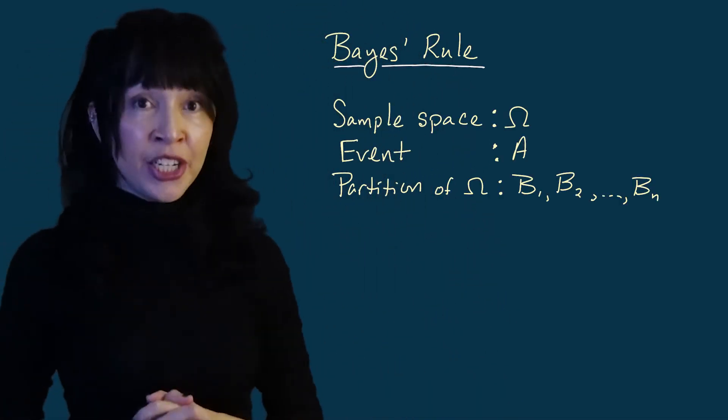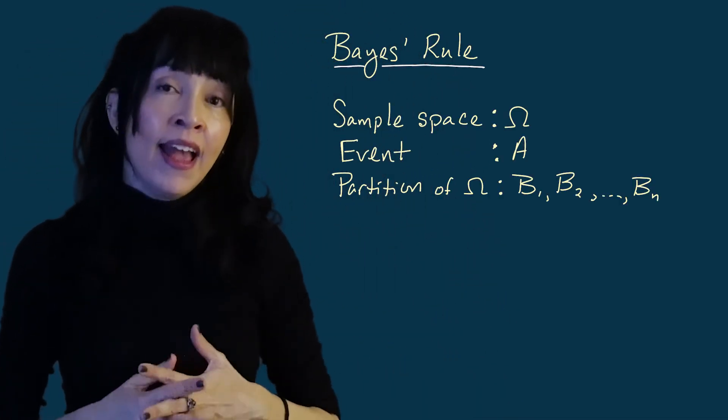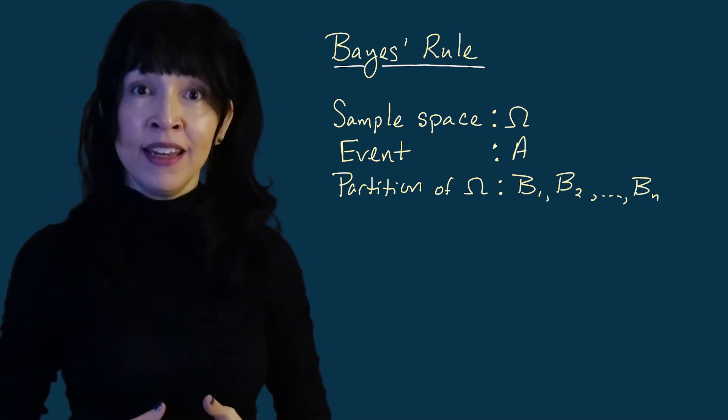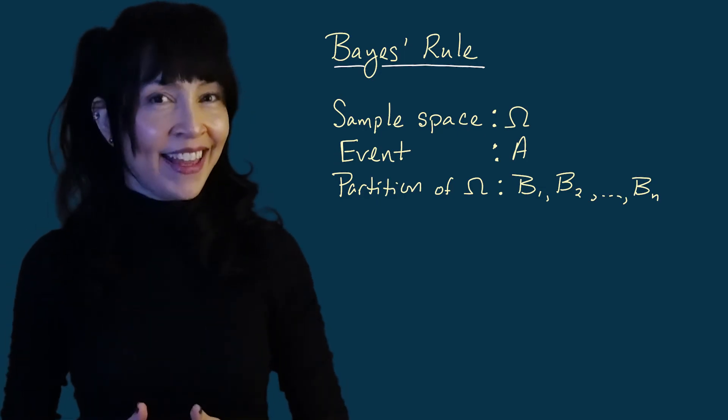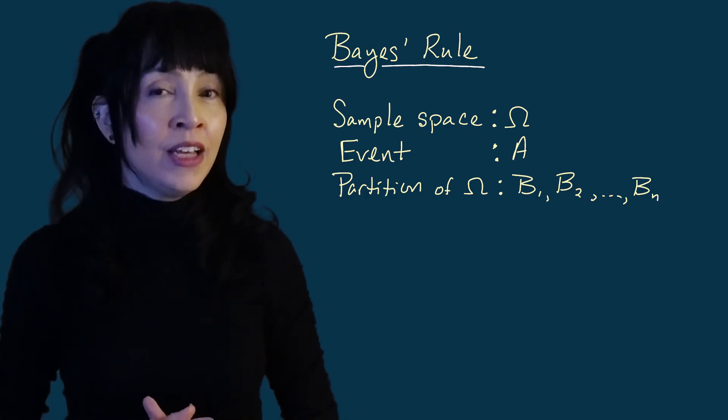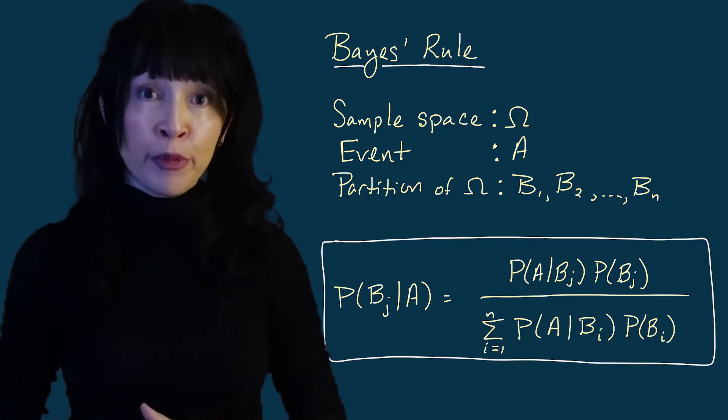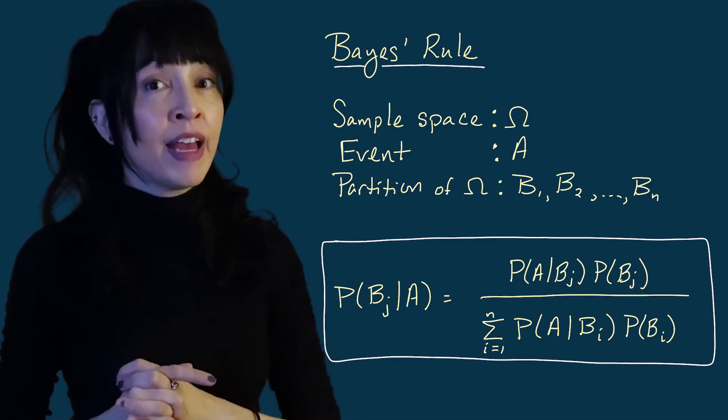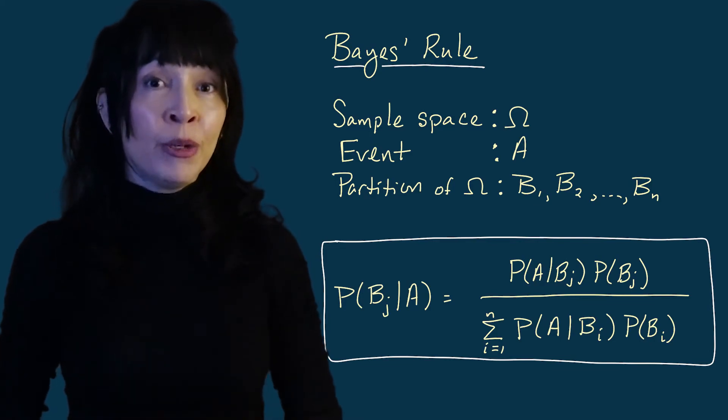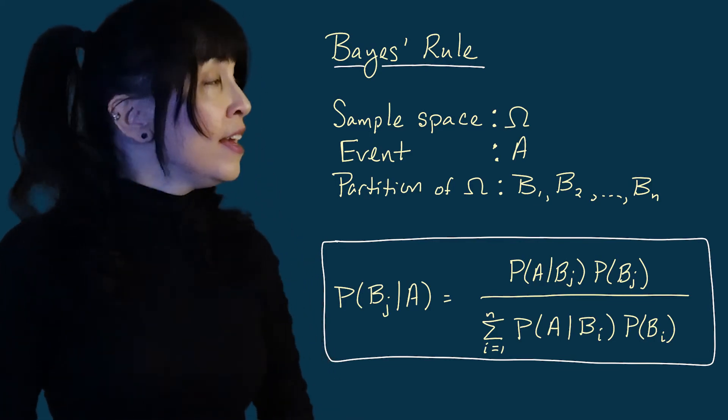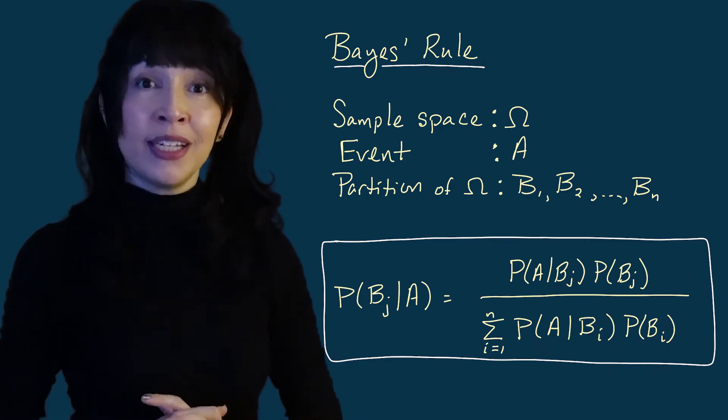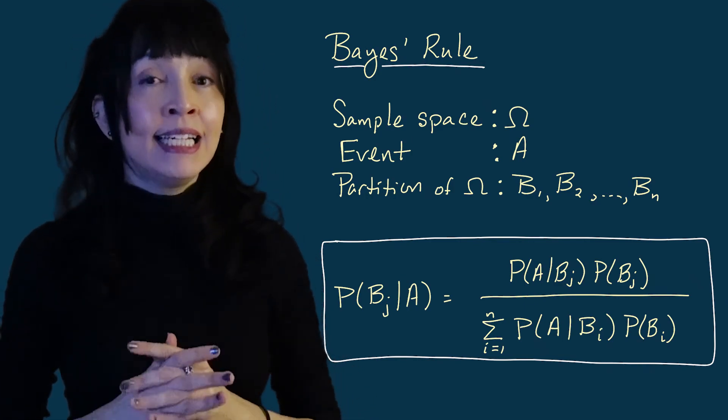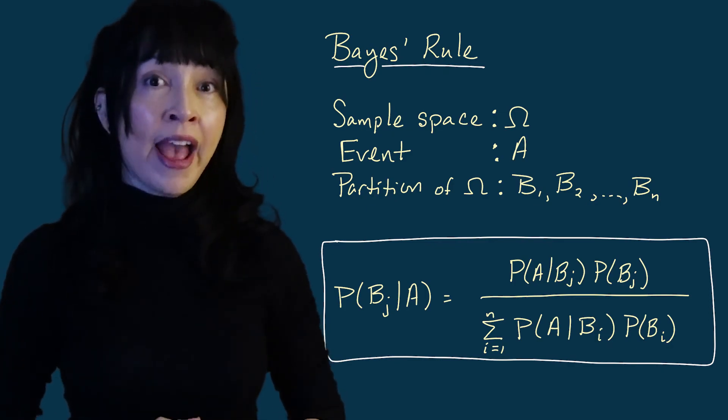But in general we're going to have a partition of the space omega and it's going to be made up of n sets B1 through Bn and we're going to have an event A that we're interested in. So if you want to find the probability that the event Bj happened given the event A happened you can rewrite this using Bayes rule. On the top you would put the flipped probability the probability that A happened given Bj happened times the probability that Bj happened.